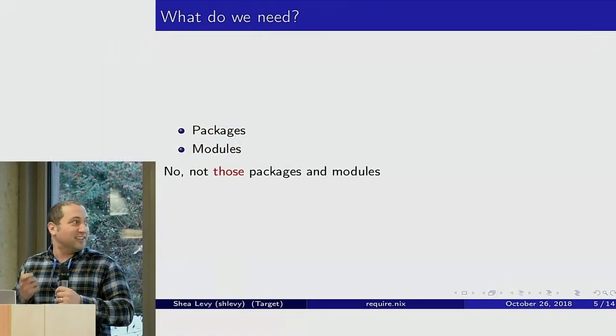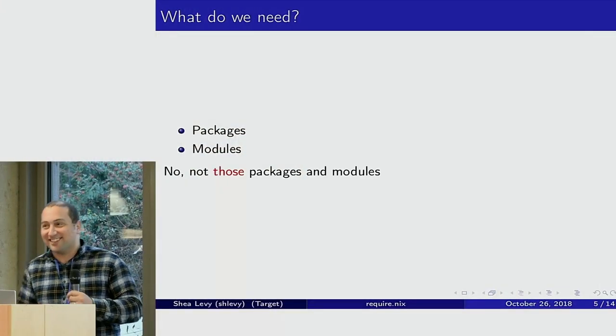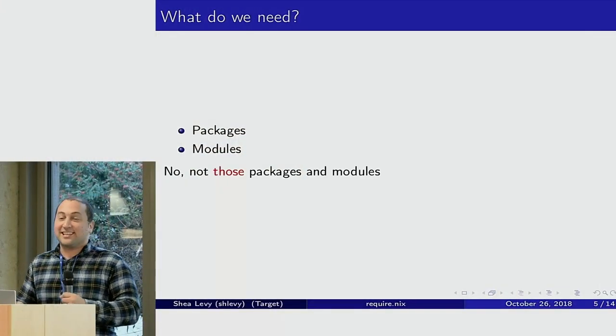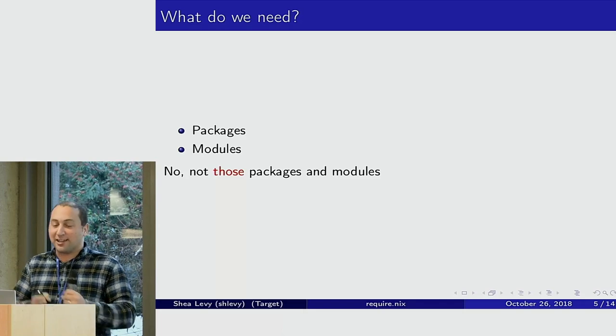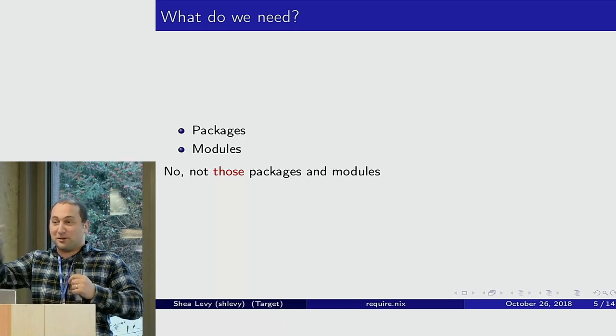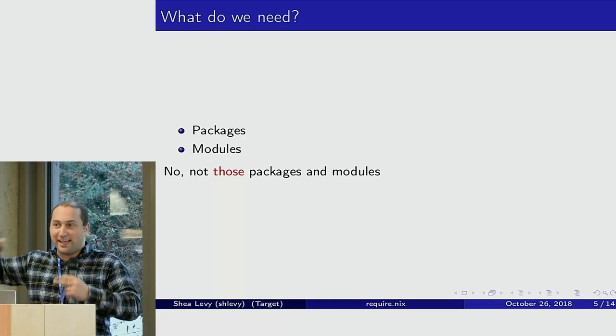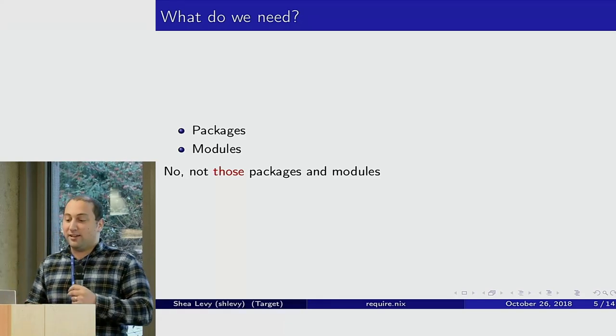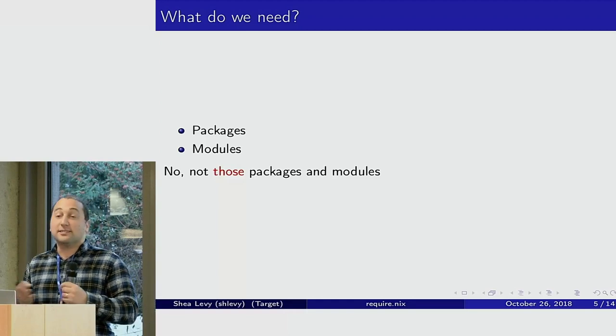So this is a problem I sat down and did some design sessions on. I think the answer — what we need in Nix that we don't have — is packages and modules. Not packages and modules in the sense that Nix means them, but in the sense of a normal programming language: Python has modules, a package exports those modules, you import that and get your definitions from it. Require.Nix is a system to provide packages and modules for the Nix language.